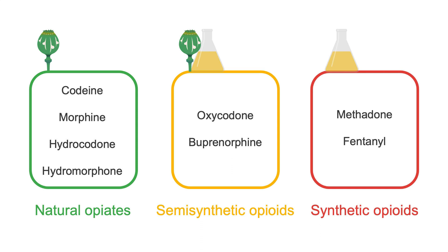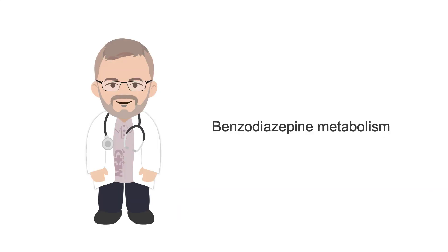We can rule out the other opioids because heroin's metabolites and other opiates would have shown up on the opiate screen. Buprenorphine alone would never cause an overdose, and methadone — which could cause an overdose — is very, very rarely injected.